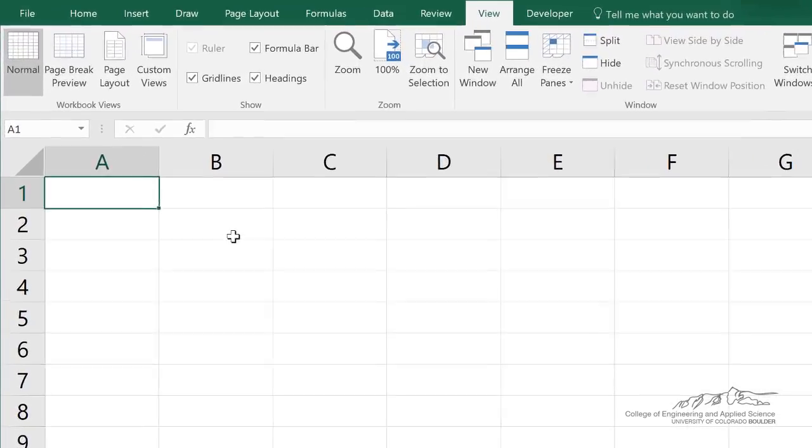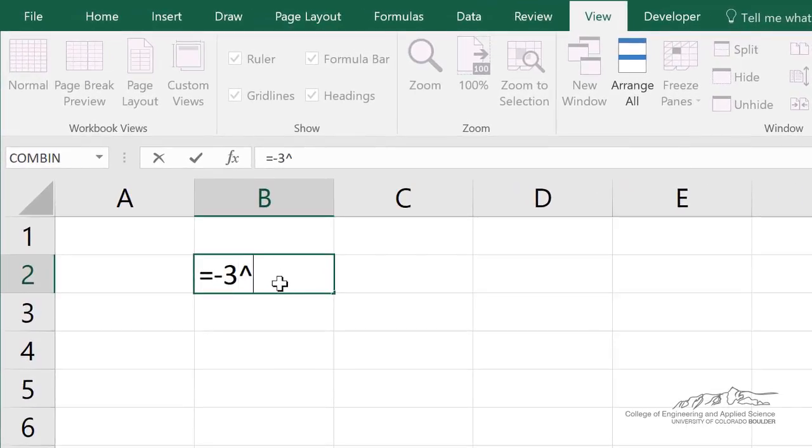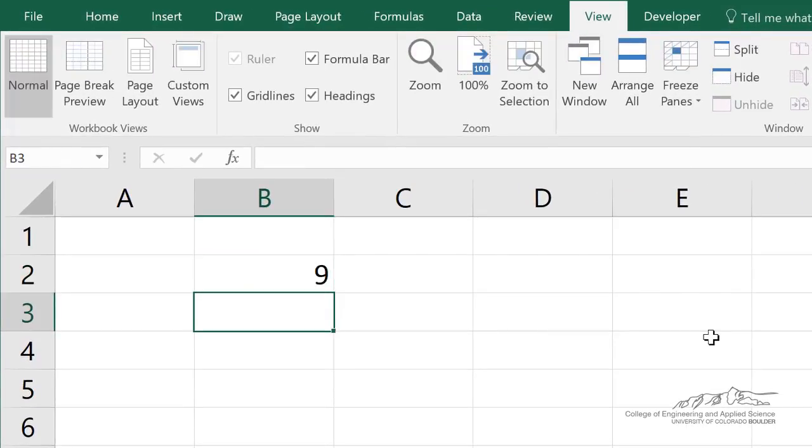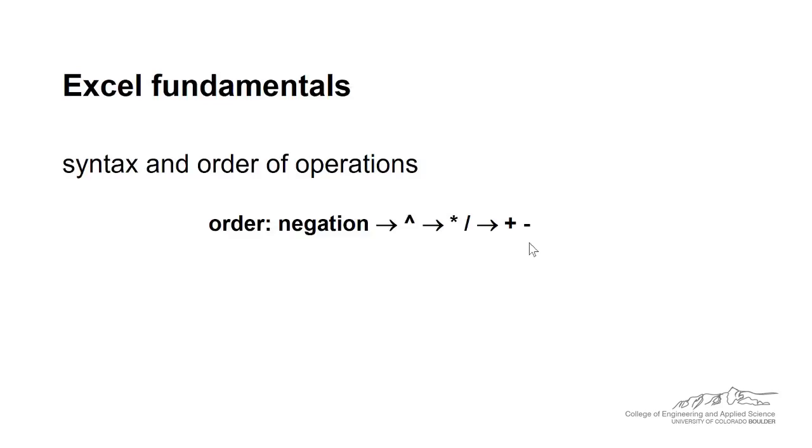So let's go ahead and put into a cell here, equals negative 3 carat 2. It's 9. If you plug this into programming calculators or most programs, negative 3 carat 2, the exponentiation, that's what the carat is, comes first. Most computer programs and calculators will do 3 squared, which is 9, and then negate it. But Excel is a little bit different.